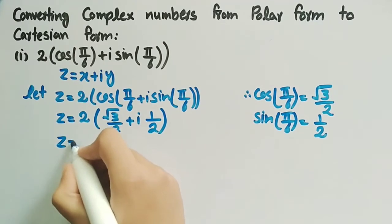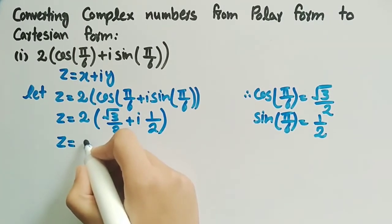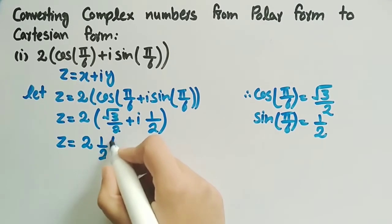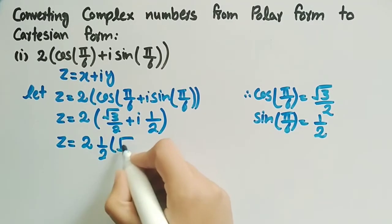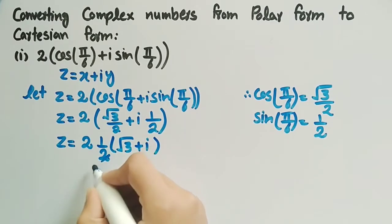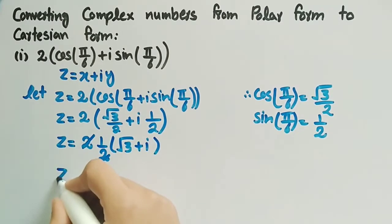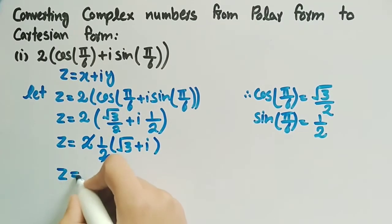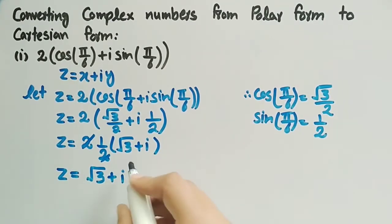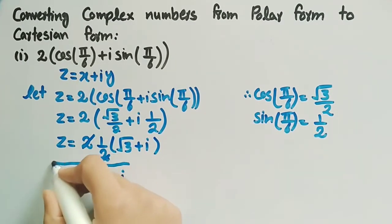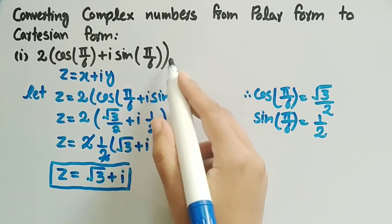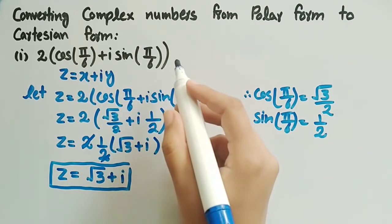Taking 1/2 common we get z = 2 · (1/2)(√3 + i). This 2 will be cancelled out and we are left with z = √3 + i. So this is the cartesian form of this complex number given in polar form.